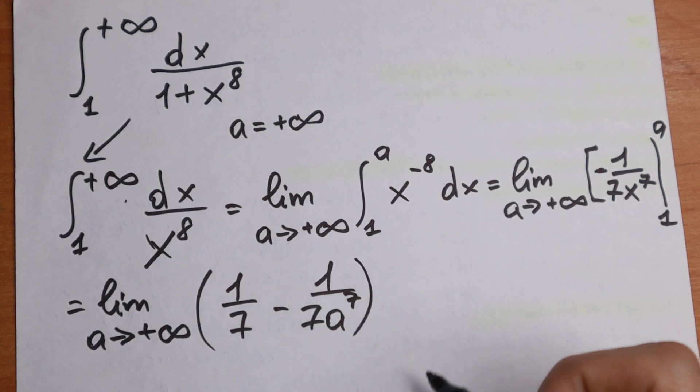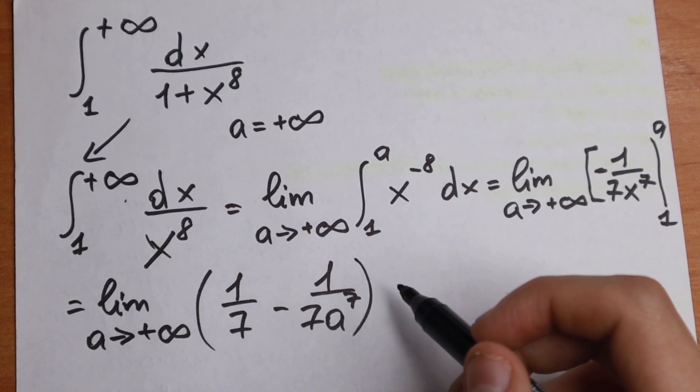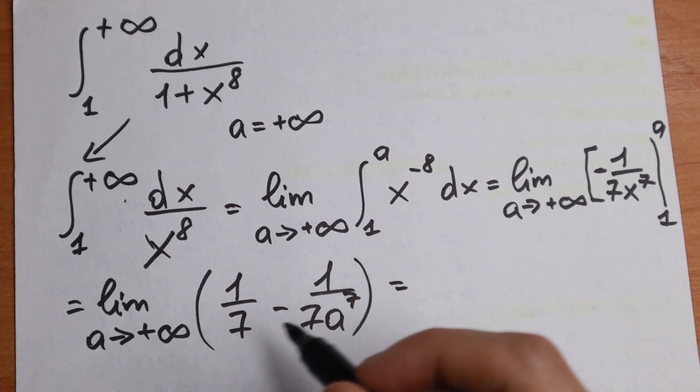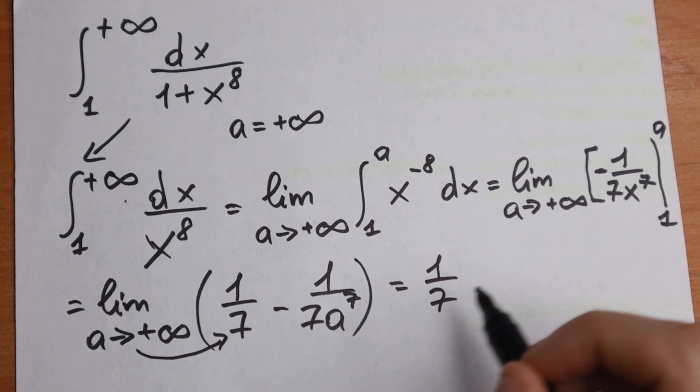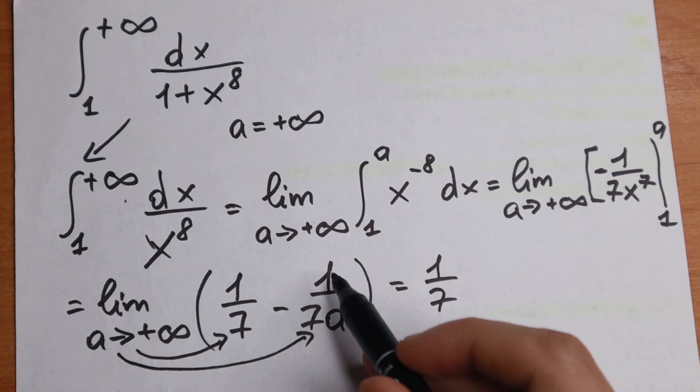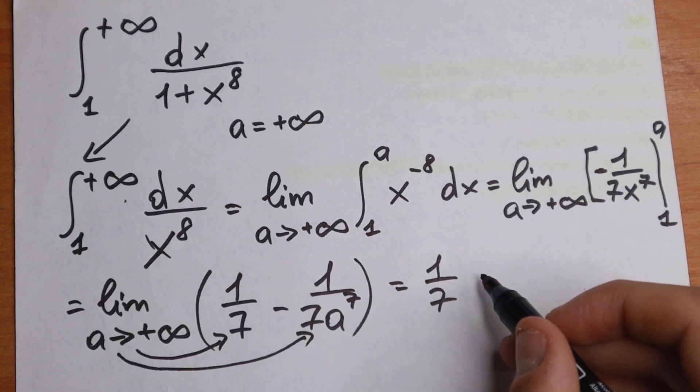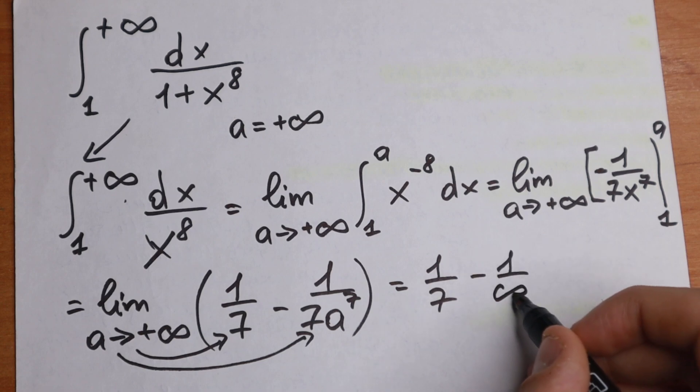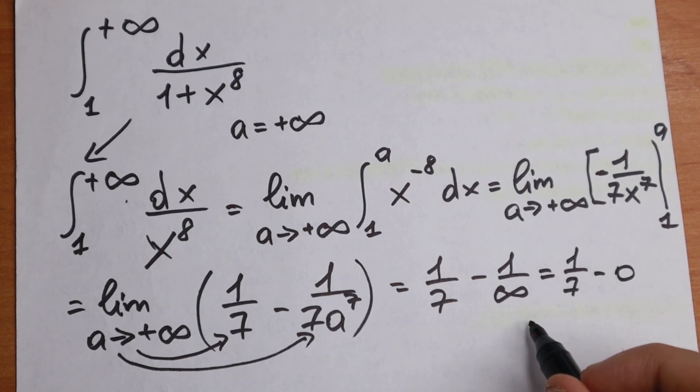So let's find the limit. Let's put infinity right here. This is a constant so it will be the same 1 over 7. Right here we have 1 over 7 times infinity, and 1 over 7 times infinity will be 1 over infinity minus 1 over infinity which equals 0. So 1 over 7 minus 0 which equals 1 over 7.